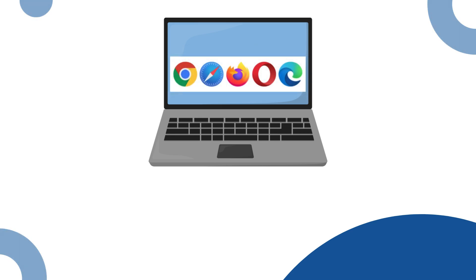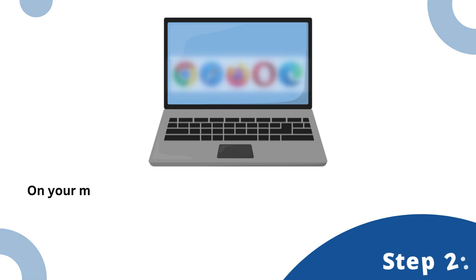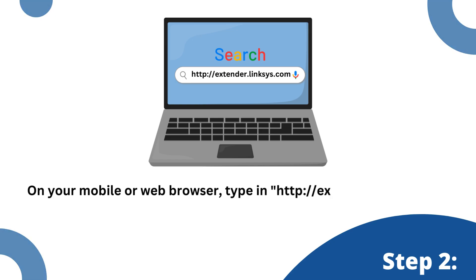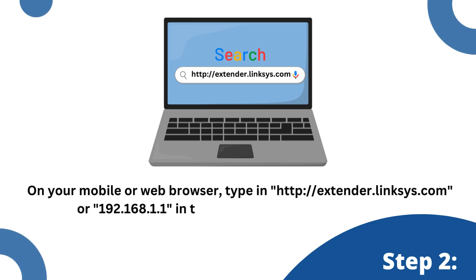On your mobile or web browser, type in http://extender.linksys.com or 192.168.1.1 in the address bar, then press Enter.